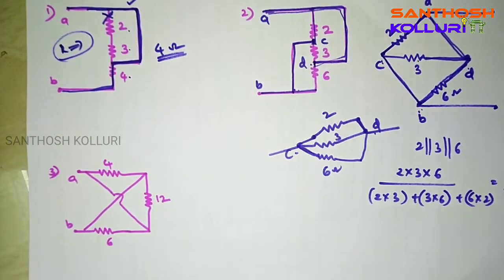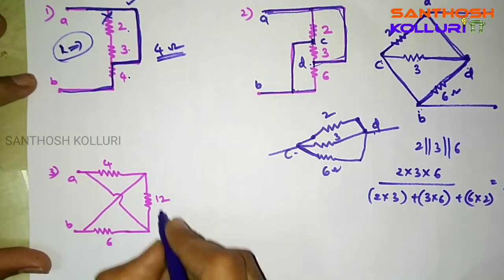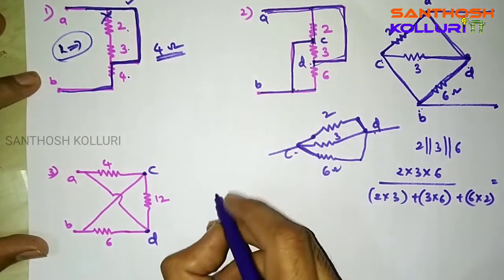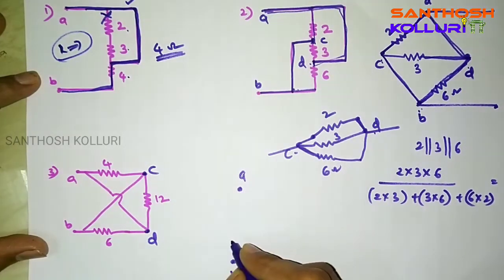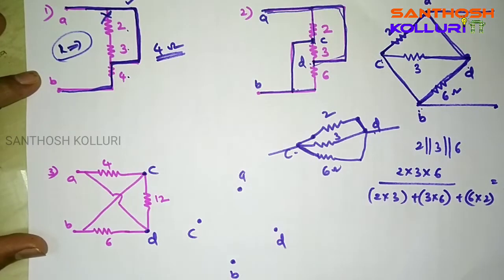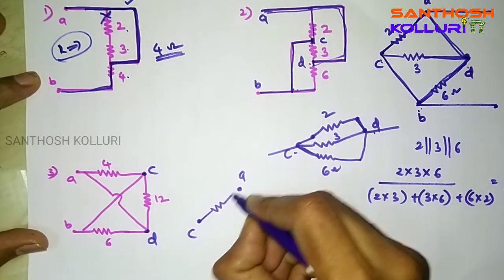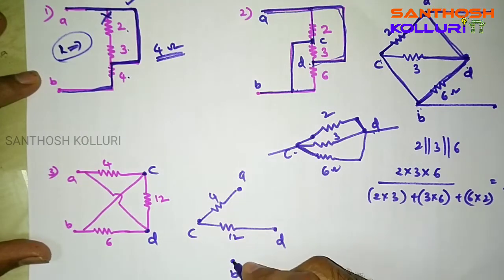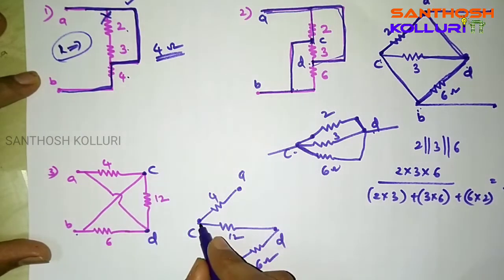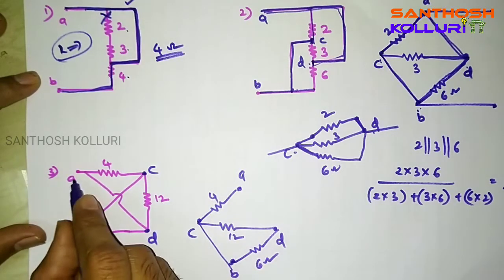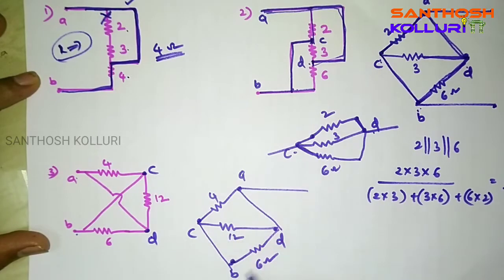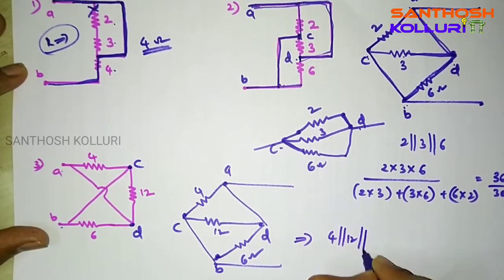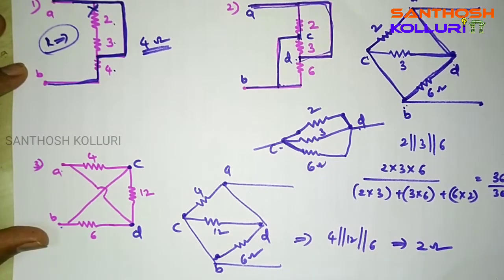Coming to the next example, same structure with terminals A, B, C, and D. Between A and C there is a resistor of 4 ohms. Between C and D, a resistor of 12 ohms. Between D and B, a resistor of 6 ohms. B and C are shorted, and A and D are also shorted — the same structure as the previous case. Therefore, the result is 4 parallel with 12 parallel with 6, which gives 2 ohms.